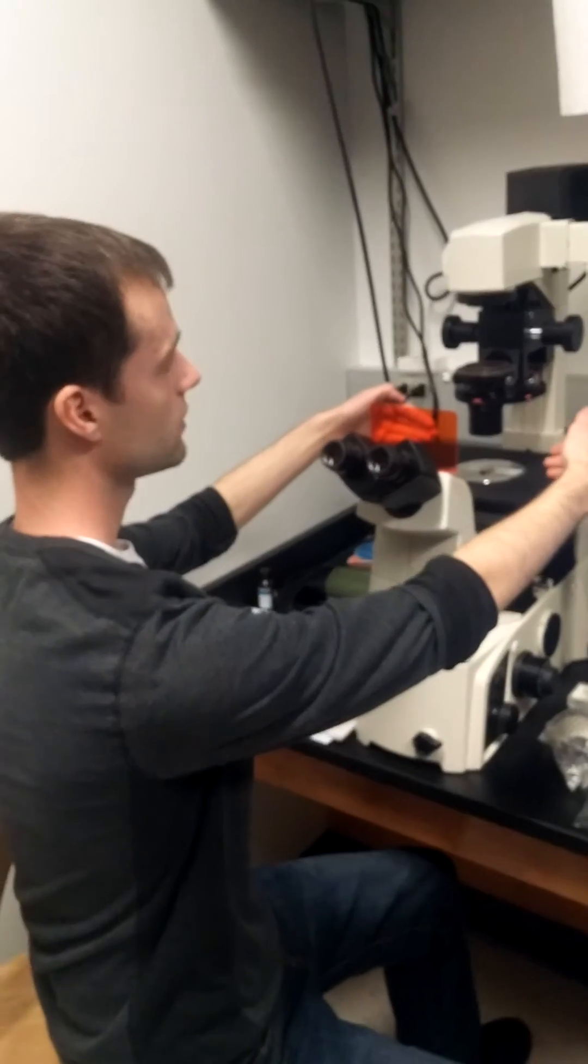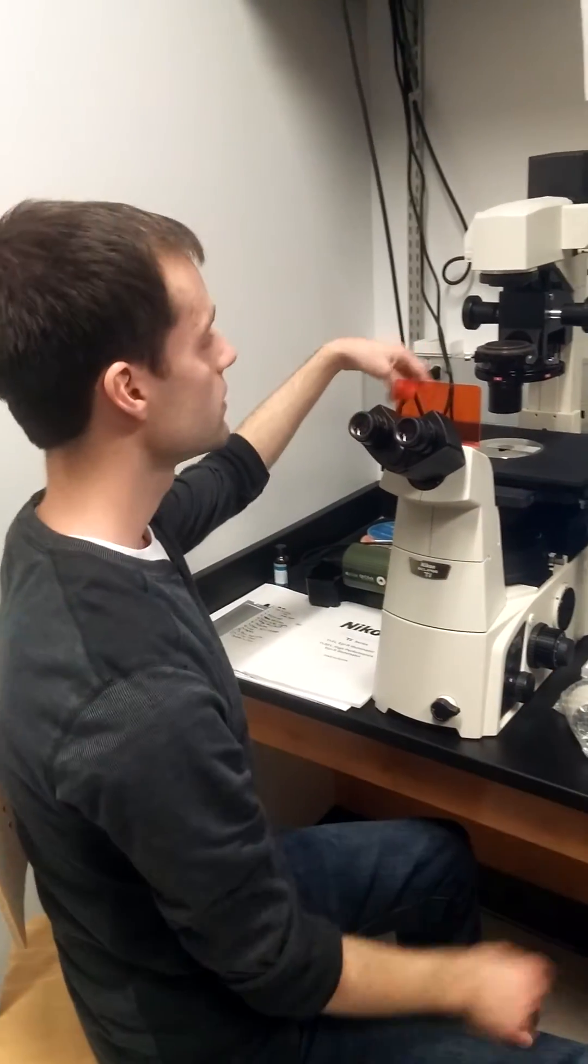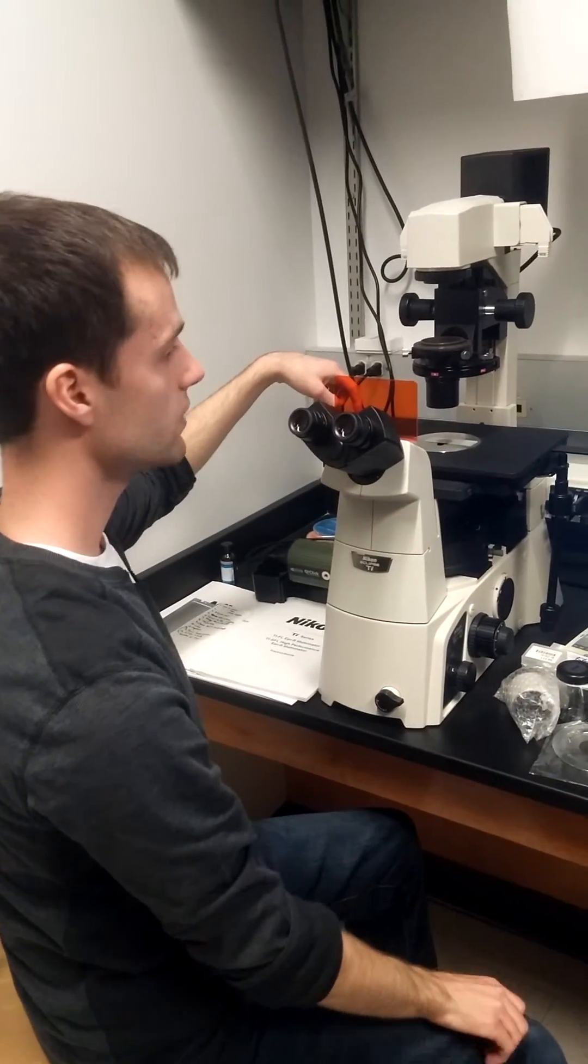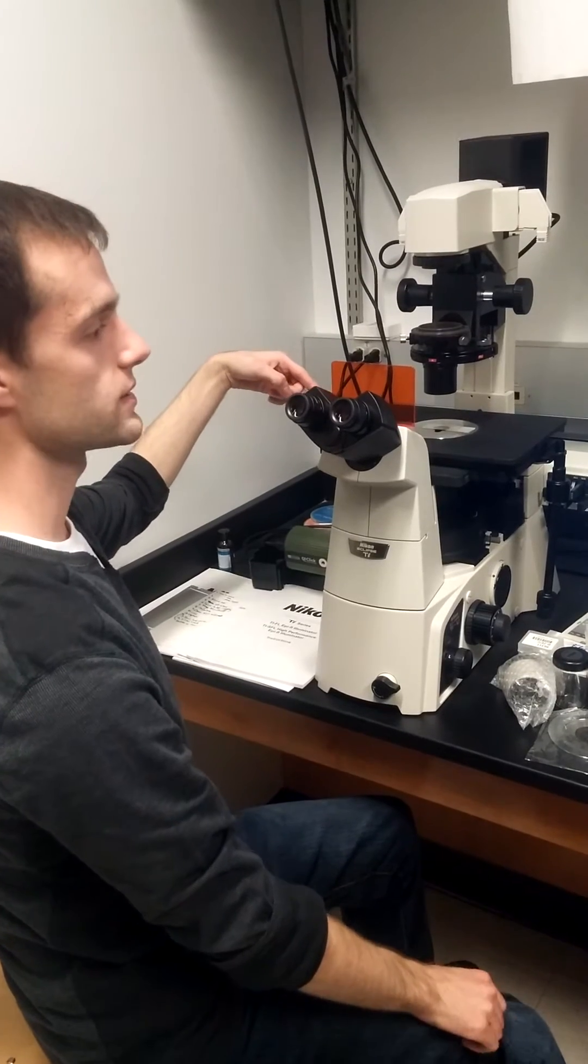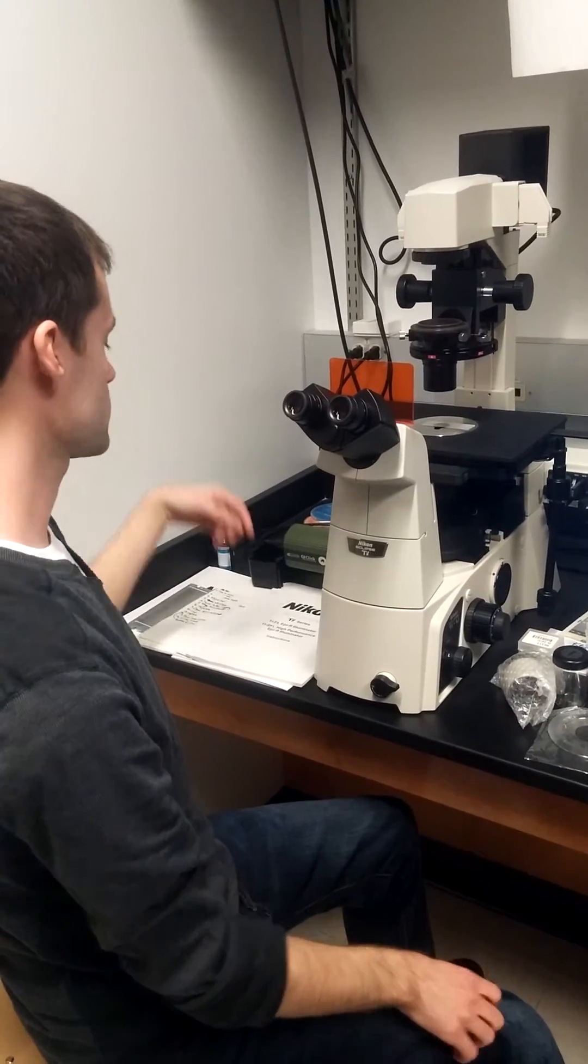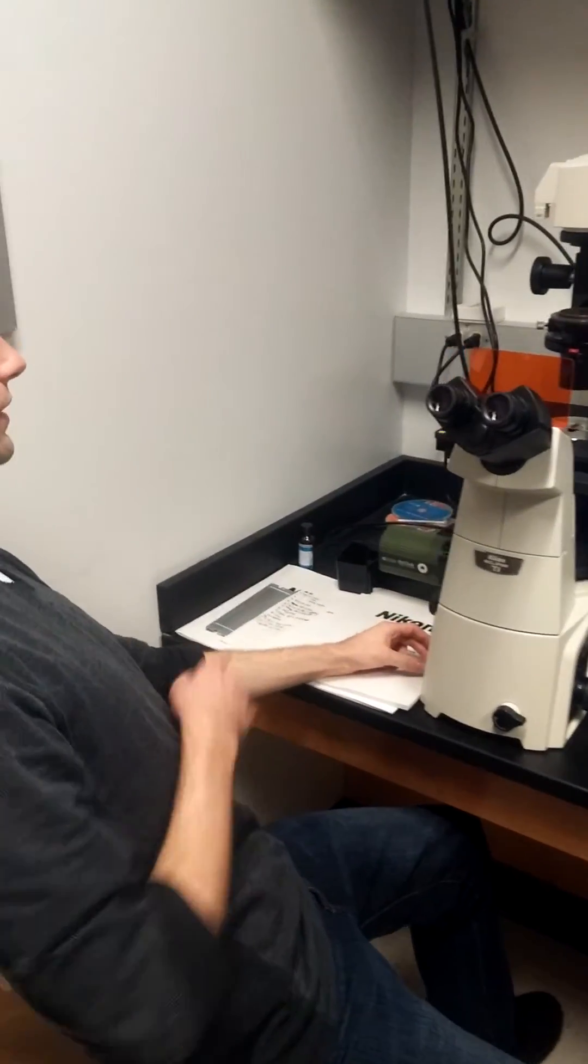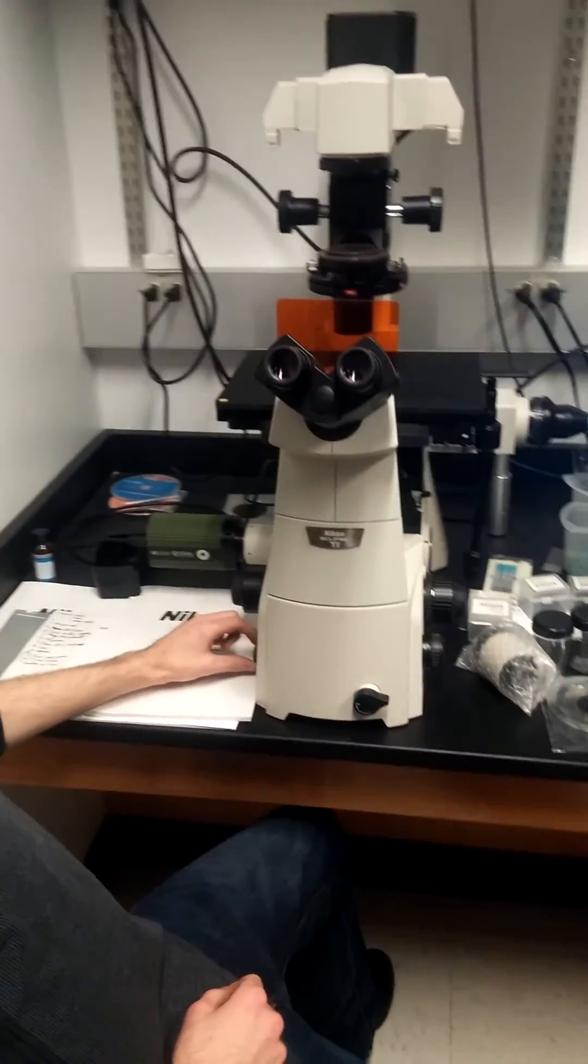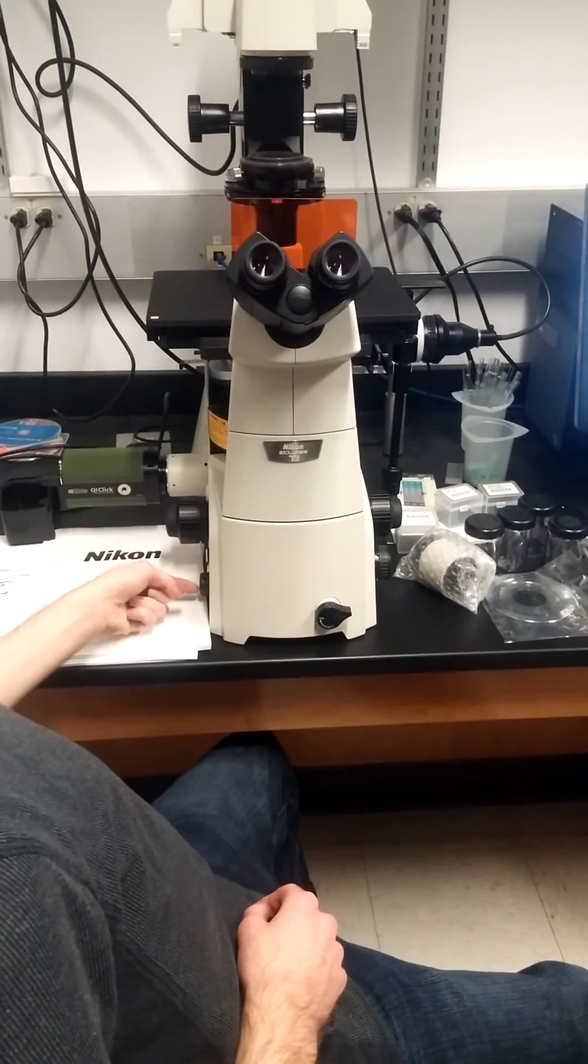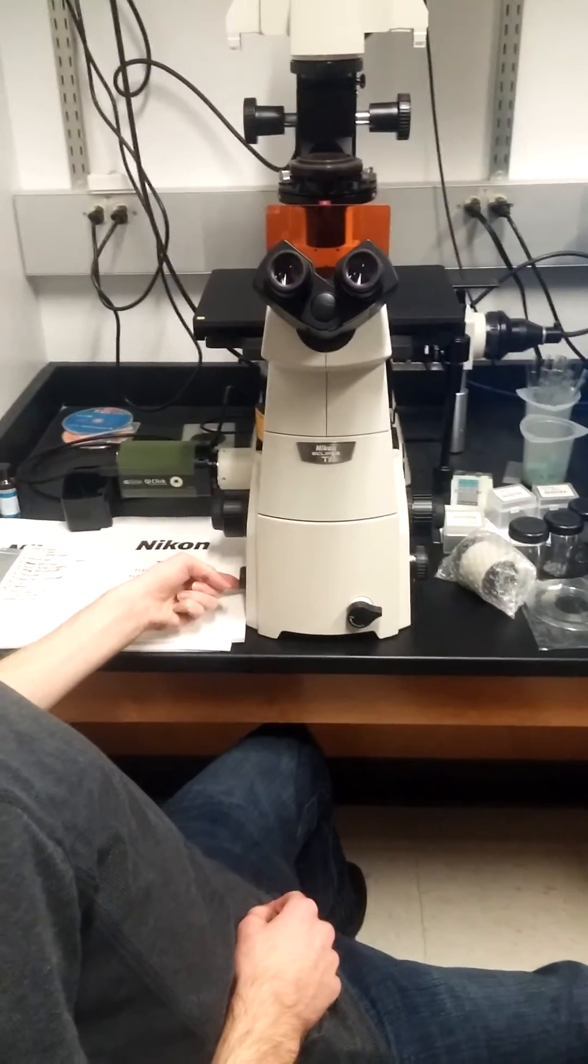Right now I'm just running regular light through this microscope. To turn on the fluorescence, if we want to take a fluorescence image, we're going to turn down the brightness of the regular light by turning down the dial on the left-hand side under the power button.